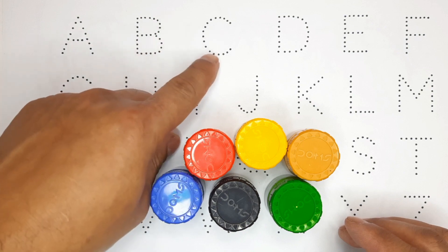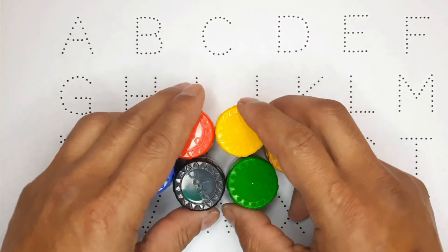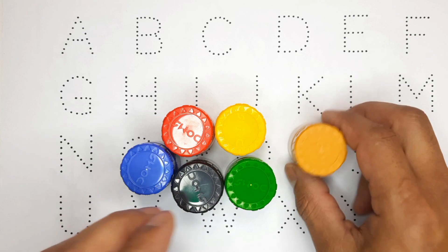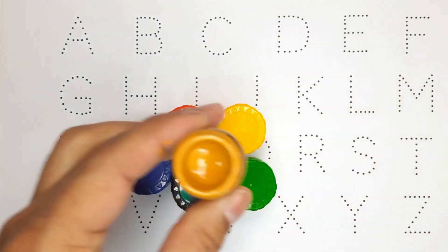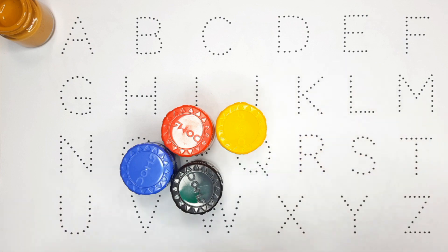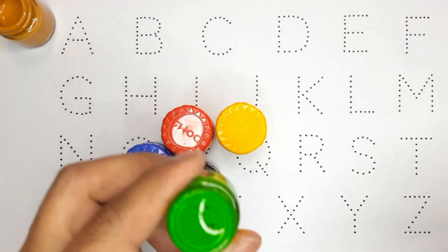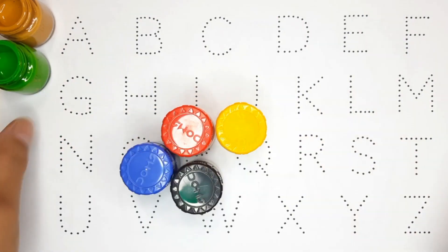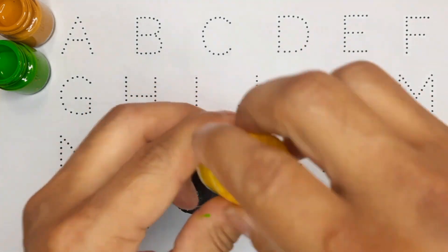So let's learn the name of colors: orange color, green color, yellow color.